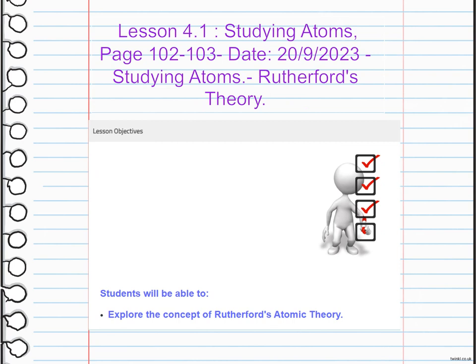Rutherford's atomic theory, proposed by Ernest Rutherford in the early 20th century, introduced the concept of the atomic nucleus. He conducted his famous gold foil experiment, where he observed that most of the alpha particles passed through the foil, but a small percentage were deflected or bounced back.